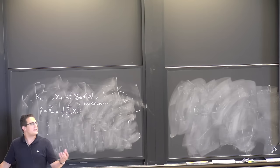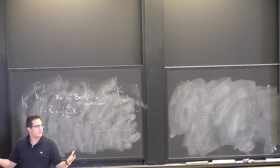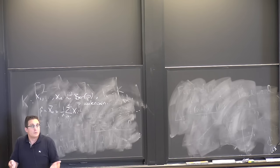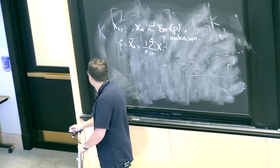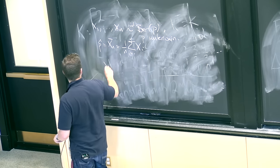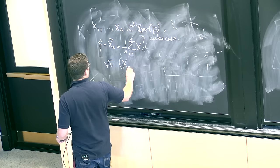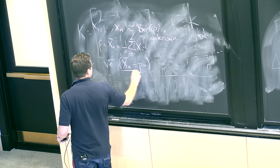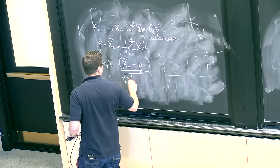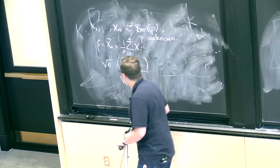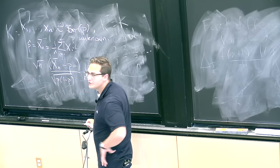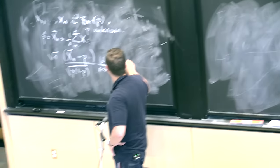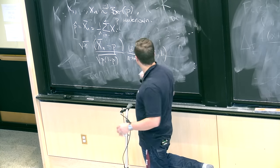We wanted to build confidence intervals around p-hat. We wanted to understand how much p-hat fluctuates — it's a random variable, an average of random variables. So we want to know its distribution. The central limit theorem told us that if I take square root of n times xn-bar minus p, divided by the standard deviation, this converges as n goes to infinity in distribution to a standard normal random variable.